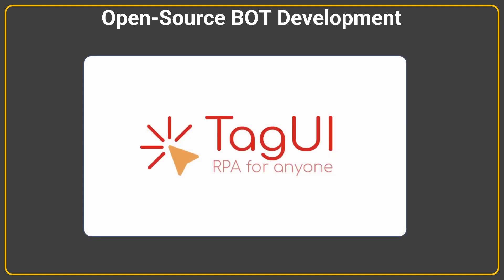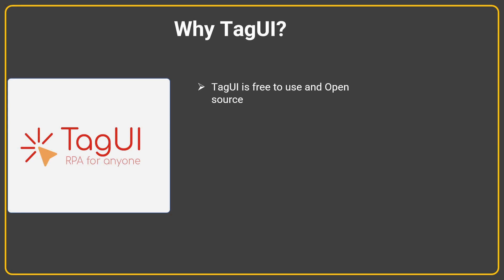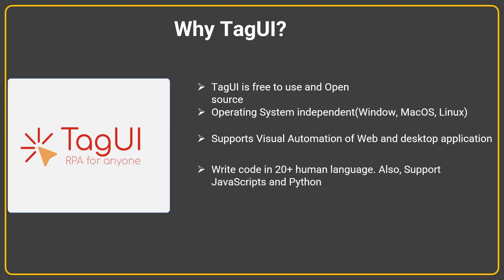In this session series our primary focus will be on the open source bot development tool TagUI. It's getting very popular as it is free and open source. It is operating system independent — you can run it on Windows, Mac, or Linux. It supports visual automation of web and desktop applications. You can write in 20+ human languages and it also supports JavaScript and Python. The learning curve is pretty easy — you can get started in a day. To conclude, we are going to focus on TagUI RPA. Thanks for watching this session, see you in the next one.